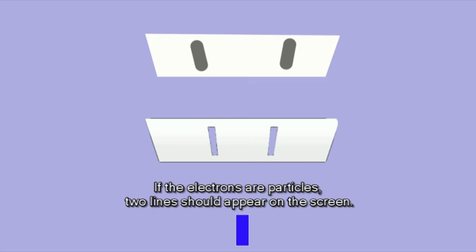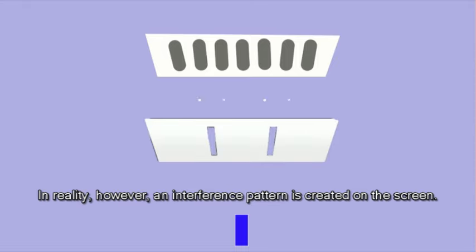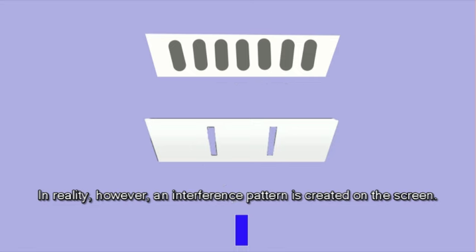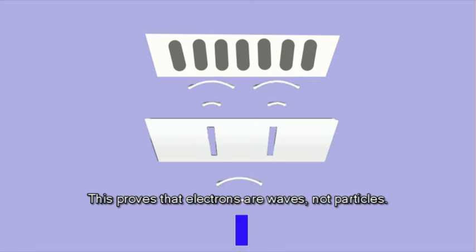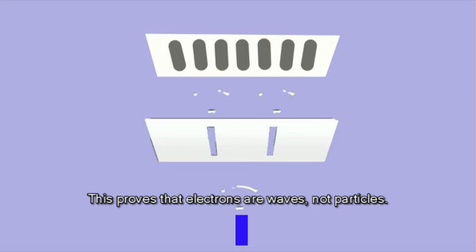If the electrons are particles, two lines should appear on the screen. In reality, however, an interference pattern is created on the screen. This proves that electrons are waves, not particles.